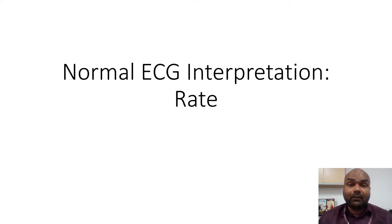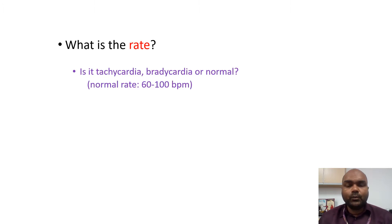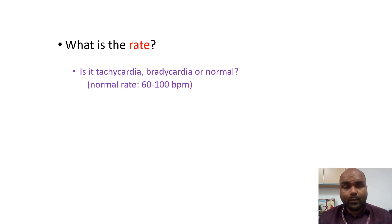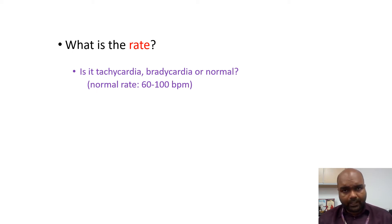Let's move to step number two of the ECG interpretation, which is the rate. We need to calculate the rate and always ask ourselves: is the rate normal? A normal heart rate is from 60 to 100. When we calculate the heart rate, we need to ask ourselves: is it tachycardia? Is it bradycardia? Or is it normal? Anything above 100 is tachycardia and anything below 60 is bradycardia.